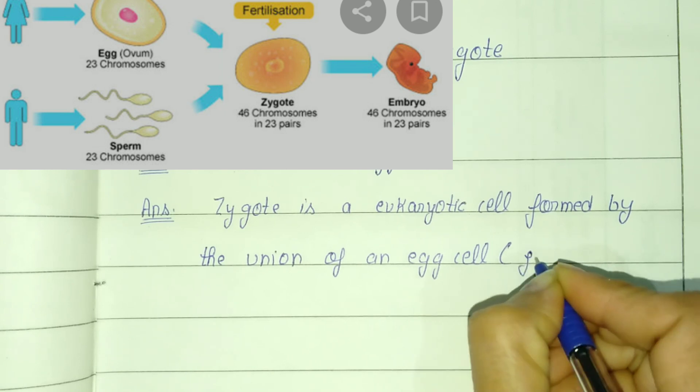Firstly zygote, zygote develops into embryo and fetus, and fetus is baby.